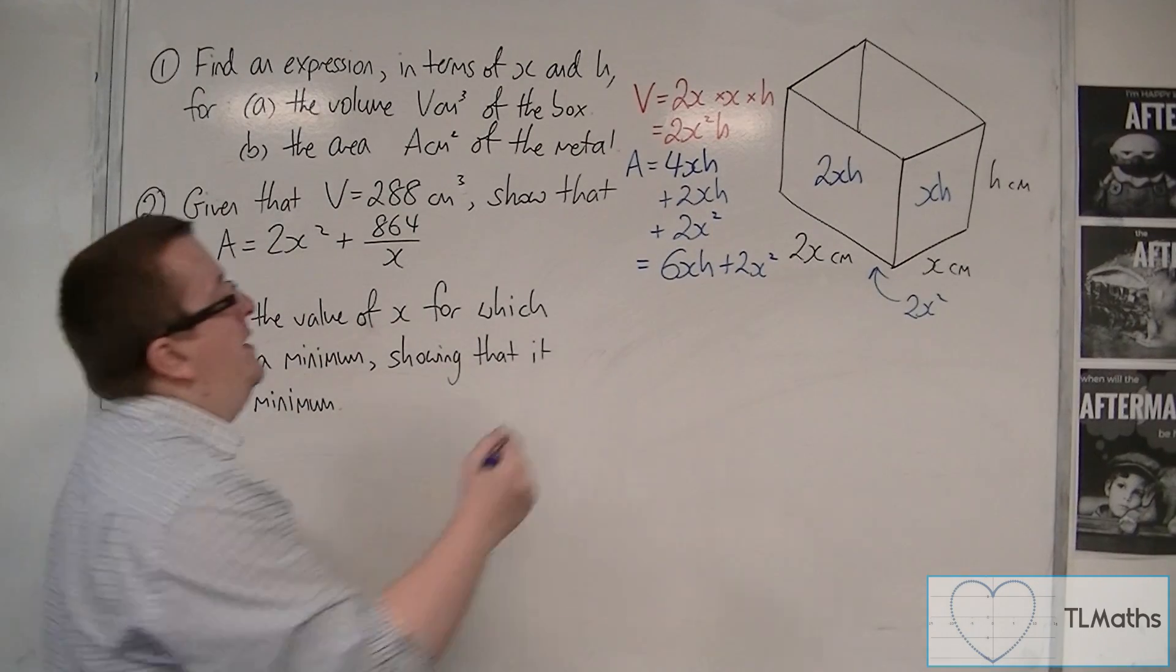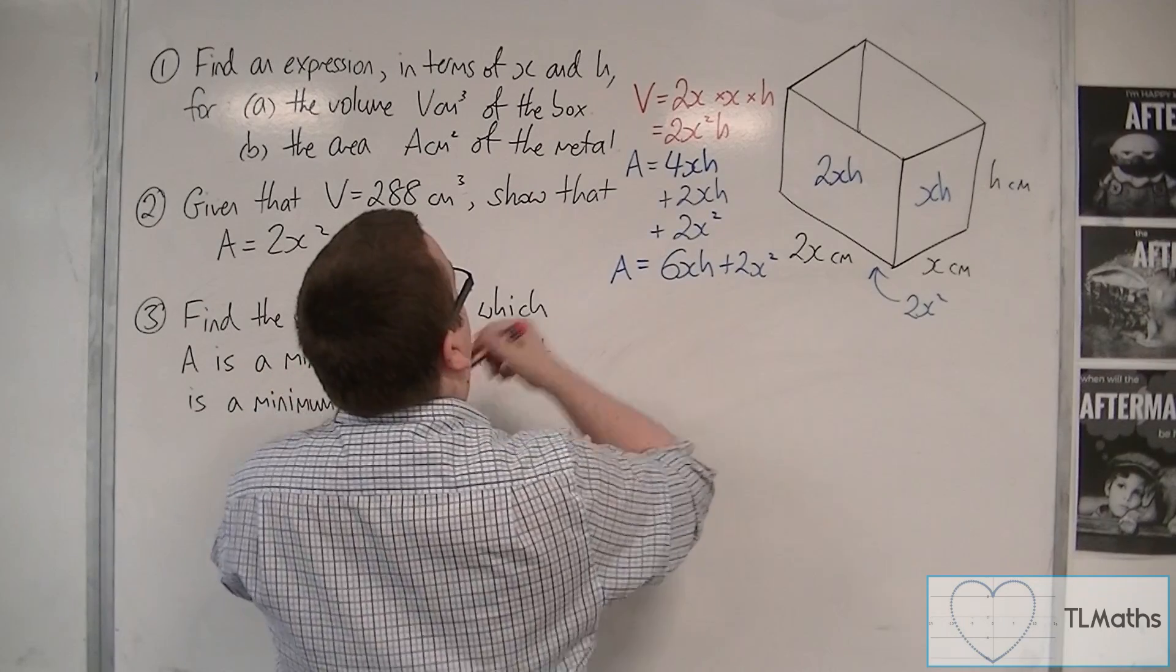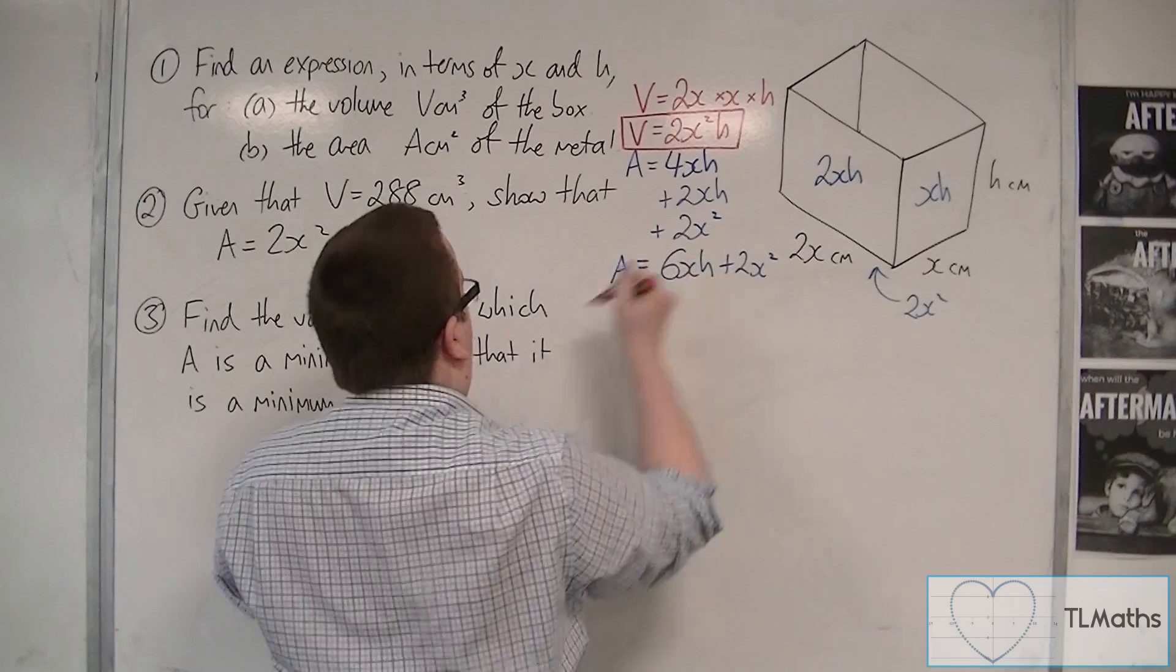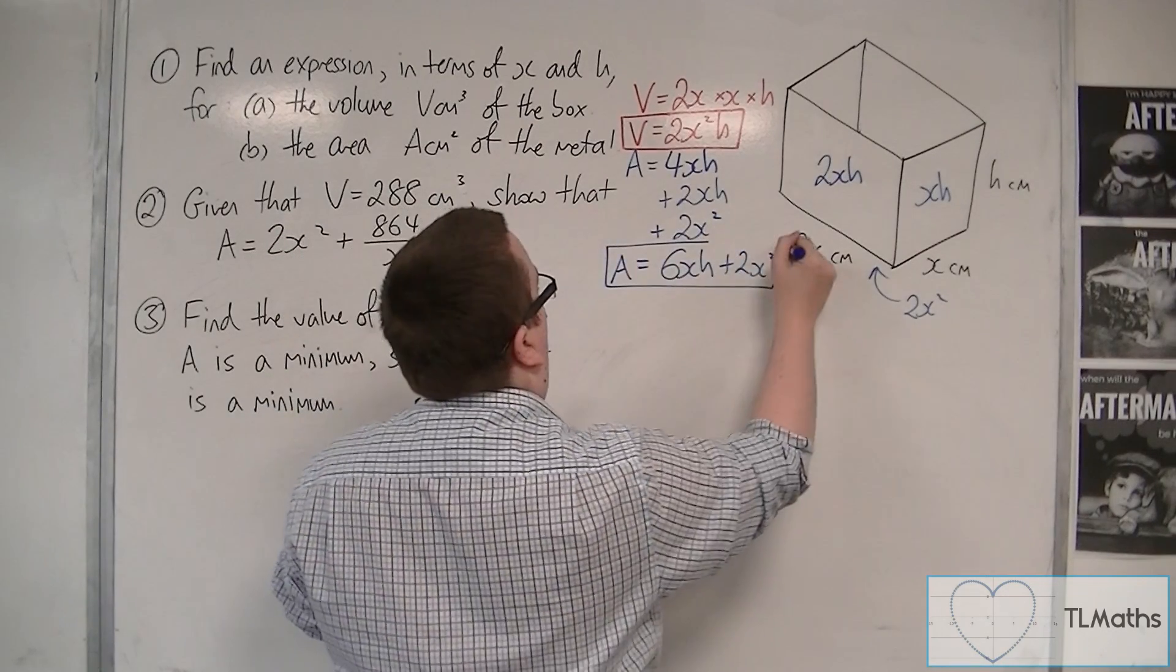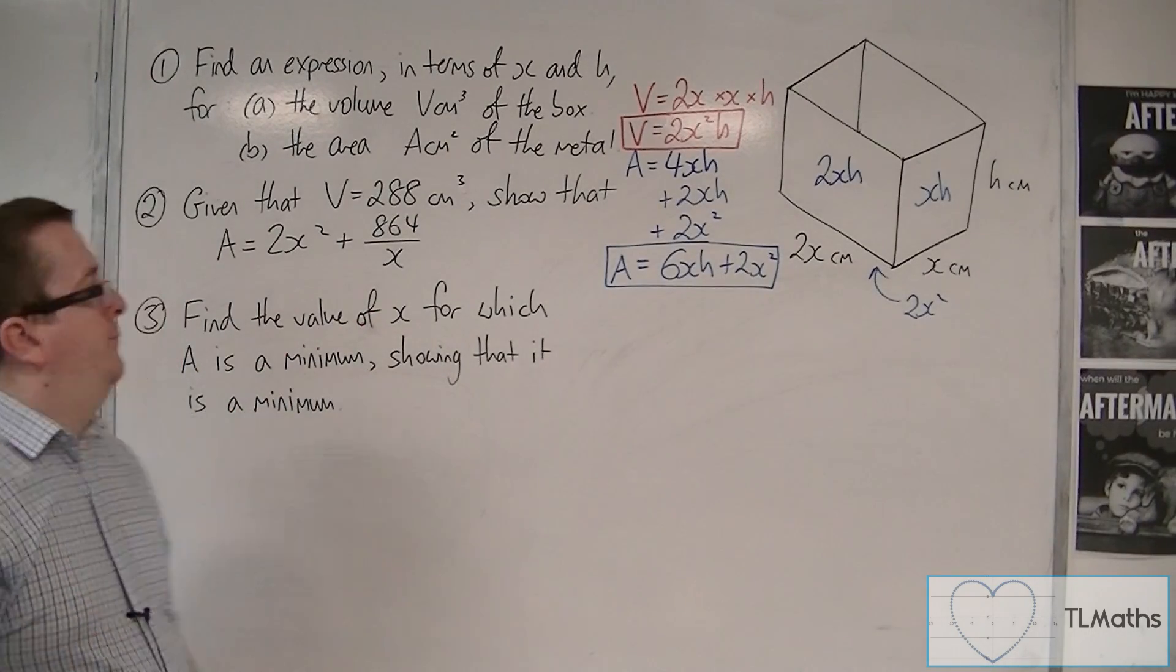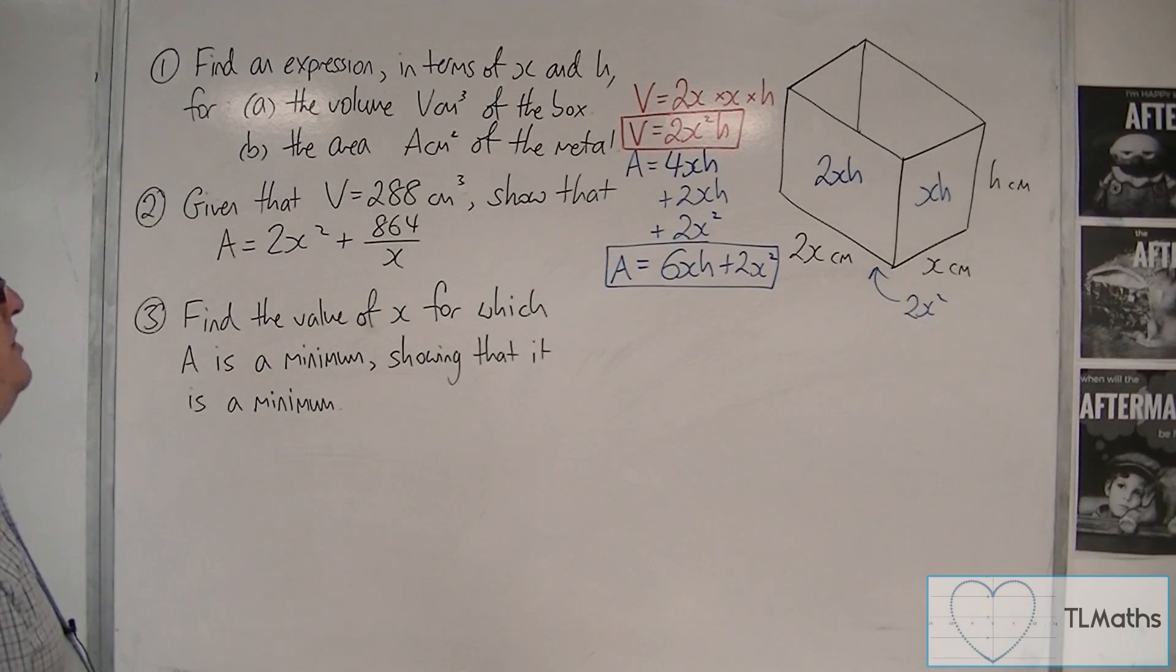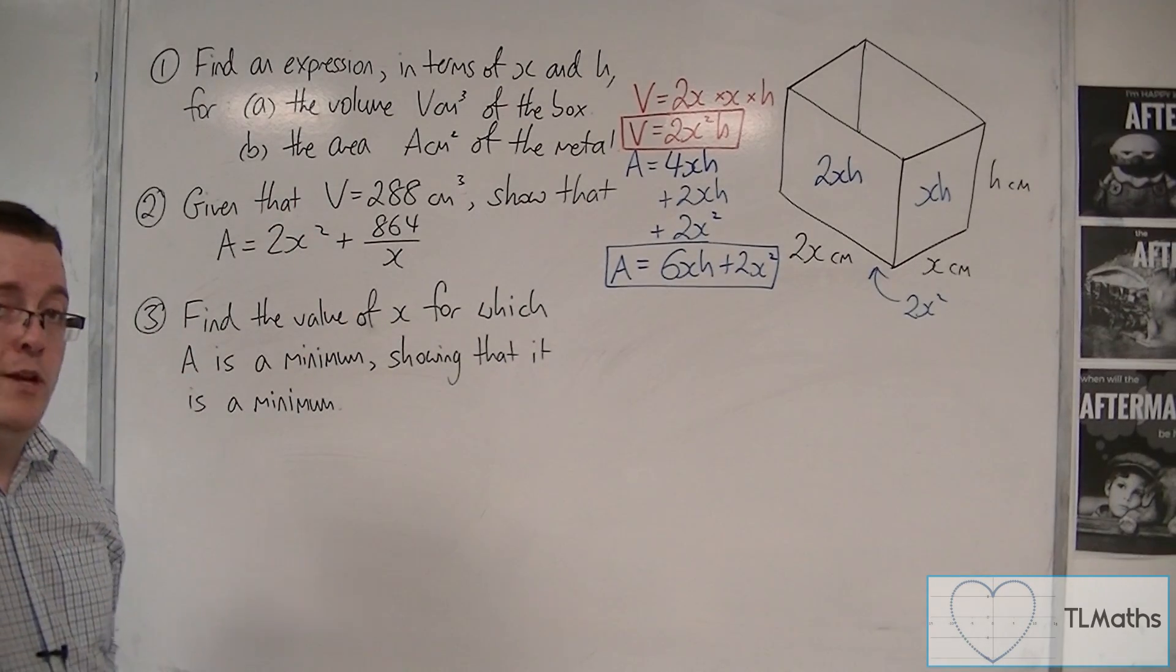So that now gives us a formula for the volume. And we've got a formula for the area, that one there. And that's what we're going to use. So, number 2, given that V, the volume, is 288 cm³, show that the area can be given by this equation.